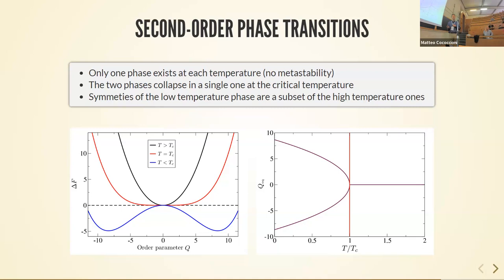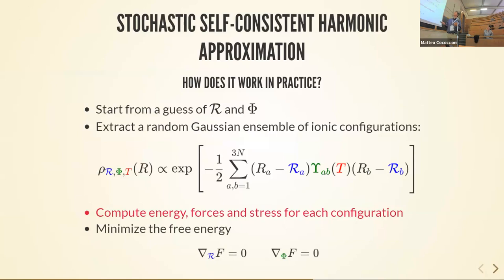On computational cost and machine learning: the most expensive step is computing energy and forces. Unlike molecular dynamics, SSCHA generates all configurations simultaneously, enabling highly parallel computation. These uncorrelated configurations can also be used directly to train a machine learning interatomic potential, which can then be used for subsequent SSCHA iterations — a strategy demonstrated in one of the online tutorials.